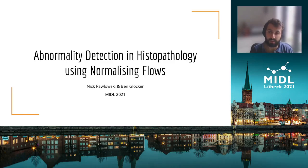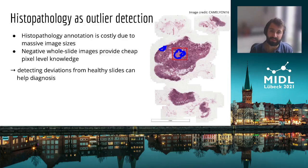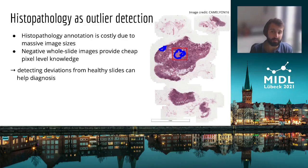Let's start by talking about why we might want to apply outlier detection to histopathology. In histopathology, one often deals with whole slide images, which are massive and multiple gigapixels in size. We're interested in the amount of tissue that is unhealthy, and often this will be cancerous tissue. As such, it is very expensive to have an expert provide bounding boxes or even pixel-wise annotations due to the sheer size of the images.